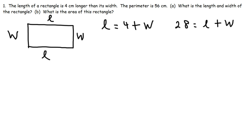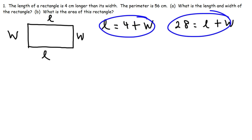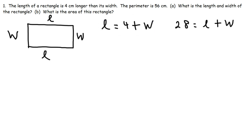Notice what we have at this point: a system of two equations and two variables. So now we have everything we need to solve for L and W. We're going to solve this system by substitution — substituting L with 4 plus W, because L equals 4 plus W.